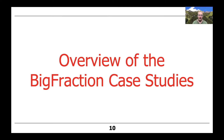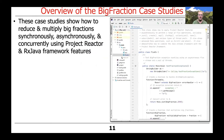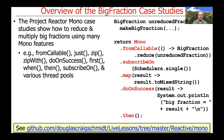So now let's give a quick overview of the Big Fraction case studies themselves. These case studies show how to reduce and multiply big fractions synchronously, asynchronously, and concurrently using various Project Reactor and RxJava framework features. There are a number of case studies in the Reactive Mono folder in my GitHub repository, and these Mono case studies show how to reduce and multiply big fractions by using many of the methods defined on the Mono class in Project Reactor.